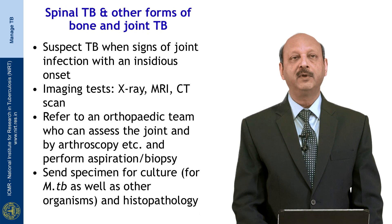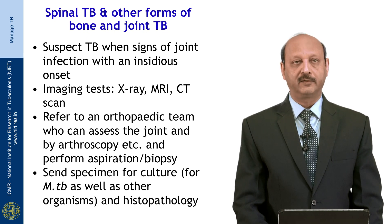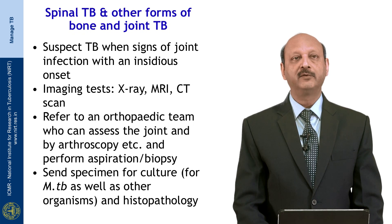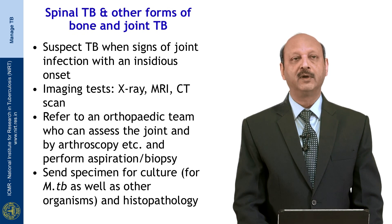In spinal TB and other forms of bone and joint tuberculosis, we should suspect tuberculosis when there are signs of joint infection with an insidious onset. Imaging tests that can be of use are X-ray, MRI and CT scan. The patient should be referred to an orthopedic team who can assess the joint by arthroscopy and perform aspiration or biopsy; this specimen should be sent for culture for MTB as well as other organisms and histopathology.